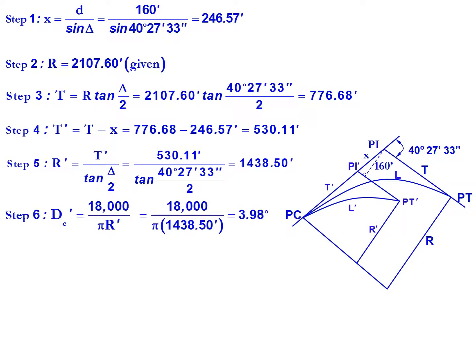We can also calculate our new degree of curvature, DC prime. This is equal to 18,000 divided by pi times our new radius. So 18,000 divided by pi times 1438.5 feet gives us a new degree of curve of 3.98 degrees.